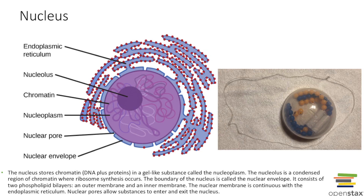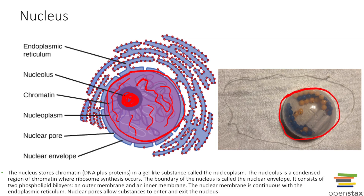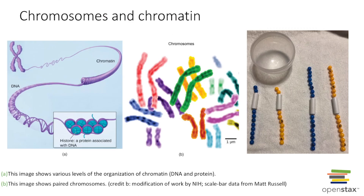Every eukaryotic cell is going to have a nucleus that houses the genetic material inside the cell. Inside the nucleus, which is bound by a nuclear membrane, we're going to have linear strands of chromosomes and a nucleolus. DNA is very long material — about six feet long — and we need to compact it into a tiny nucleus. We take the DNA, wrap it around histone proteins, and continue wrapping and condensing until it forms a chromosome.